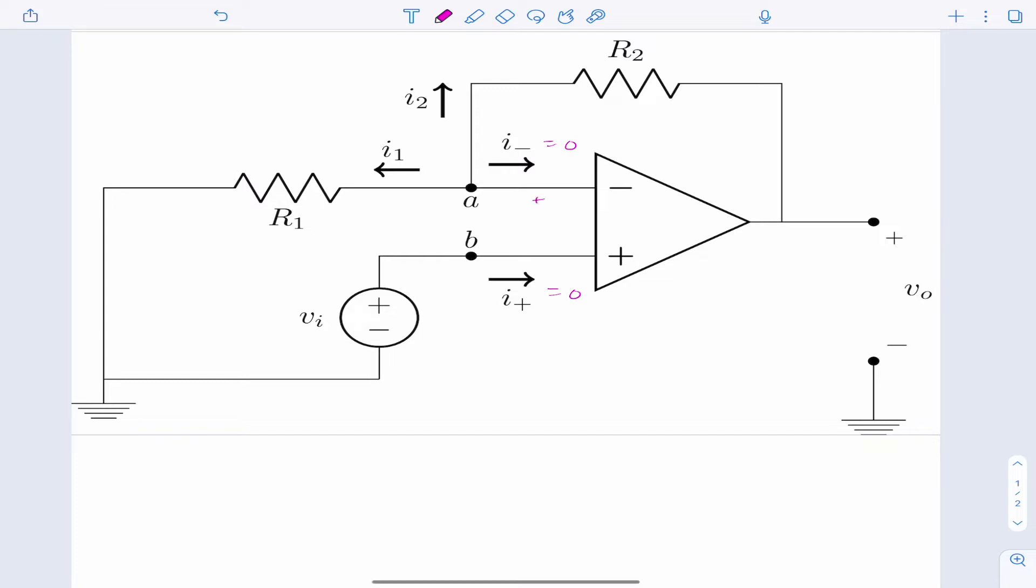So we might say VAB equals zero. And another way to say that is VA equals VB. And that automatically helps us because we know by looking at this node here that VB is equal to VI or the input voltage. So that means that VA equals VI.